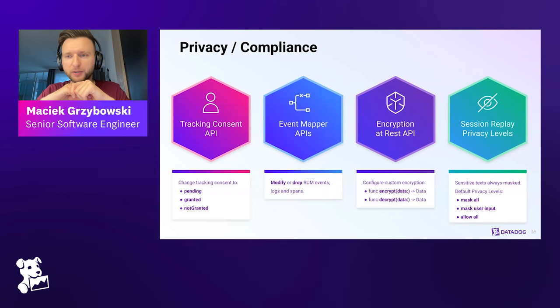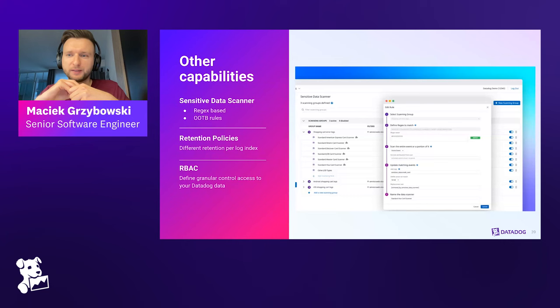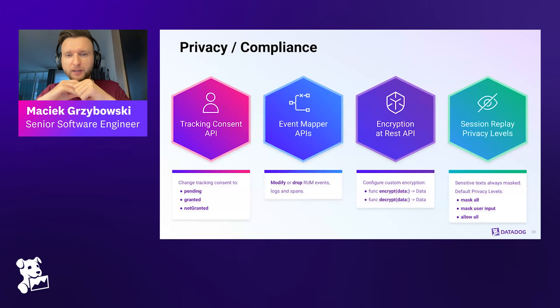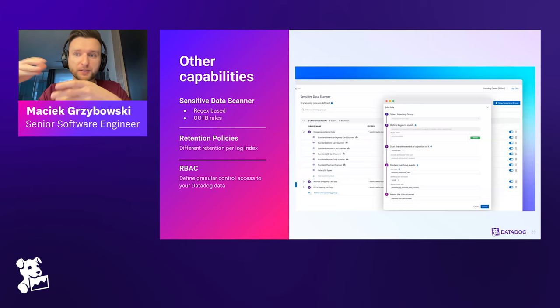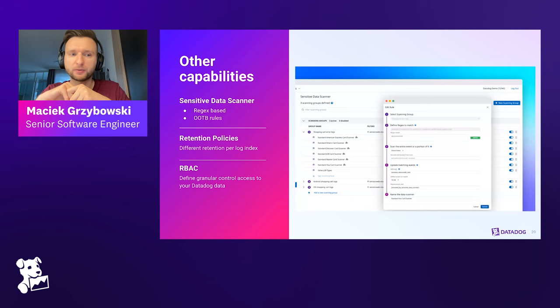Last but not least, there are two main elements related to privacy in session replay. First, all sensitive texts are masked — that includes passwords, emails, phone numbers, and credit card numbers — and there is no way to override this; we simply don't want to collect that data. On top of that, we offer three different privacy levels for other kinds of text: mask everything, mask only user input with the mask user input setting, or allow all text to be recorded. Datadog as a platform also offers a sensitive data scanner in the log pipeline, retention policies to control how long data is stored, and role-based access control to decide who has access to which portion of your data.